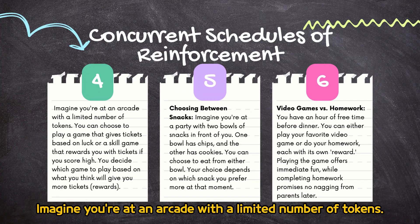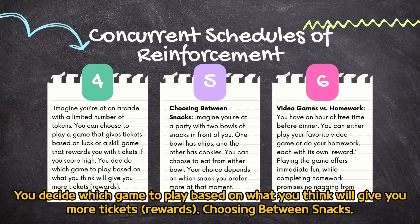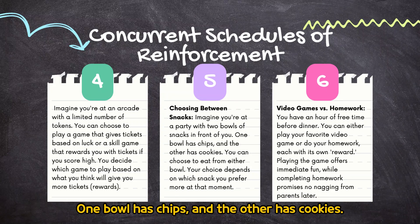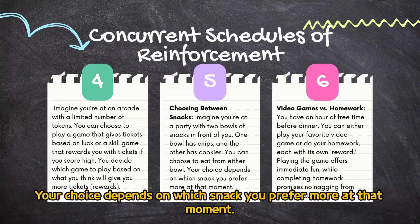Imagine you're at an arcade with a limited number of tokens. You can choose to play a game that gives tickets based on luck, or a skill game that rewards you with tickets if you score high. You decide which game to play based on what you think will give you more ticket rewards. Choosing between snacks: imagine you're at a party with two bowls of snacks in front of you. One bowl has chips and the other has cookies. You can choose to eat from either bowl; your choice depends on which snack you prefer more at that moment.